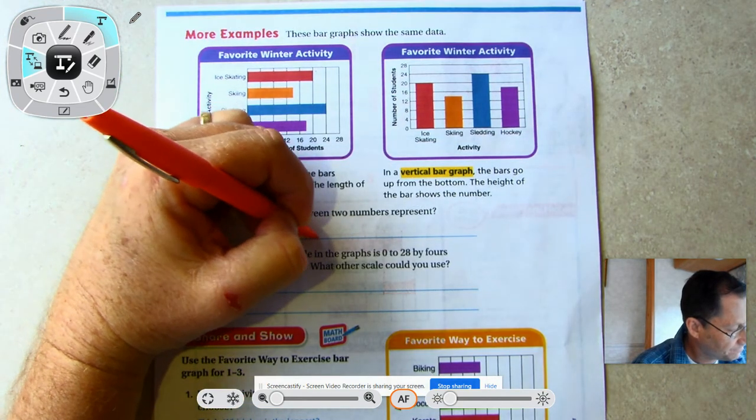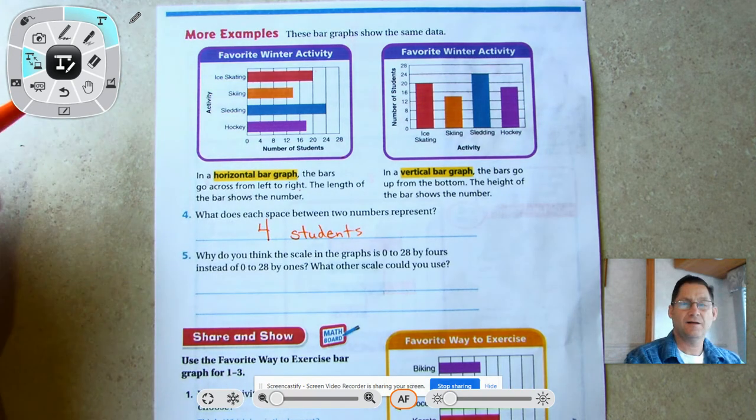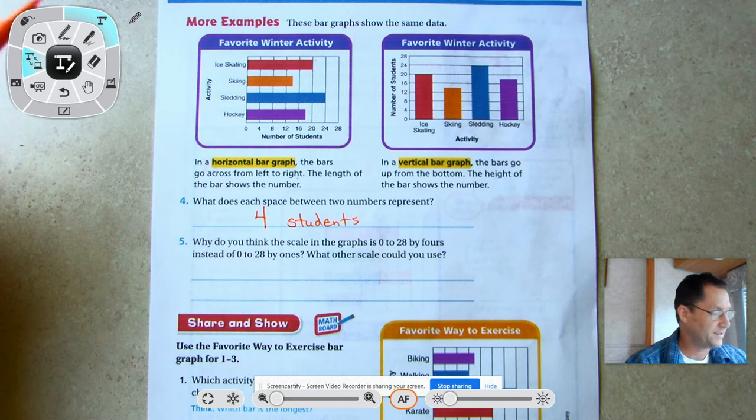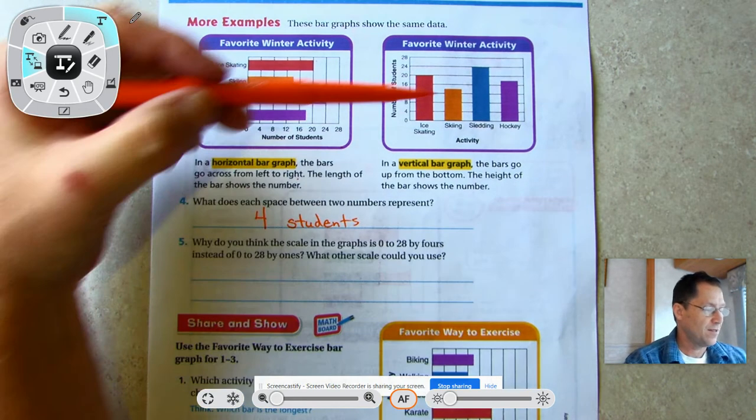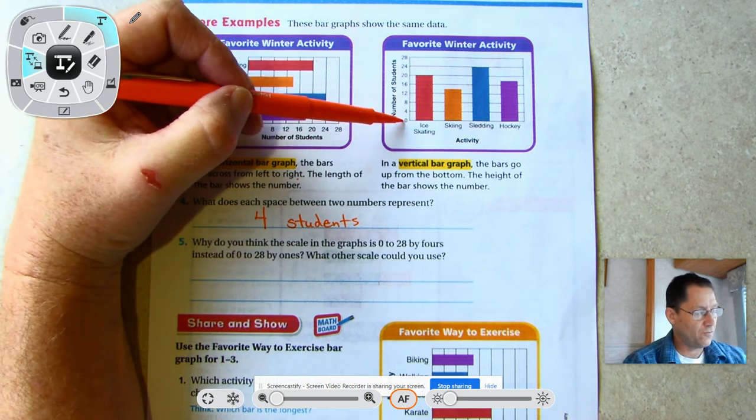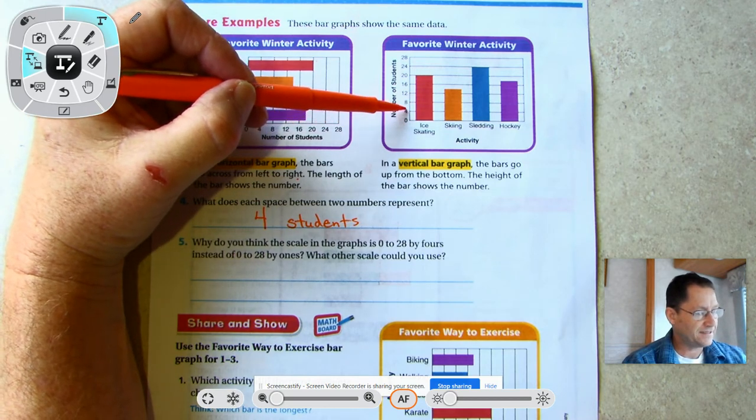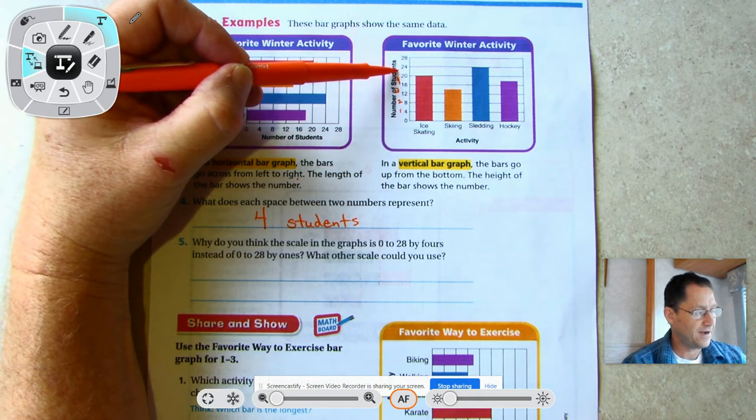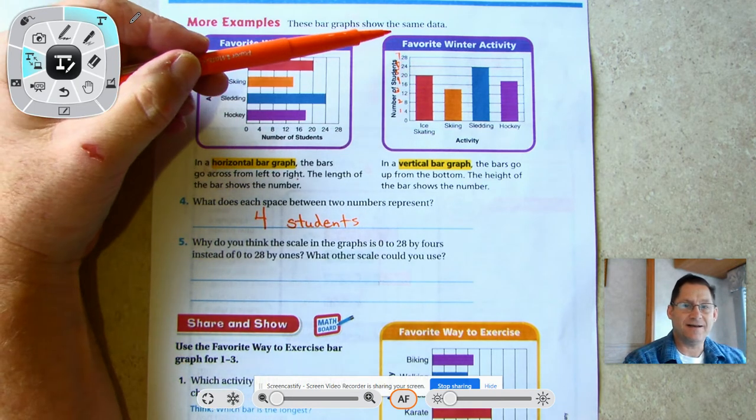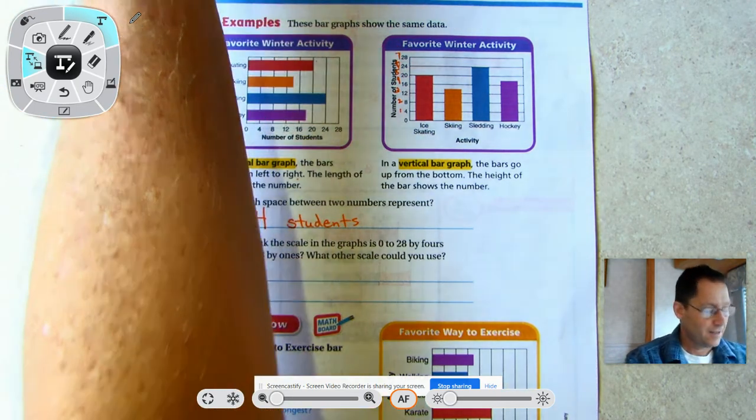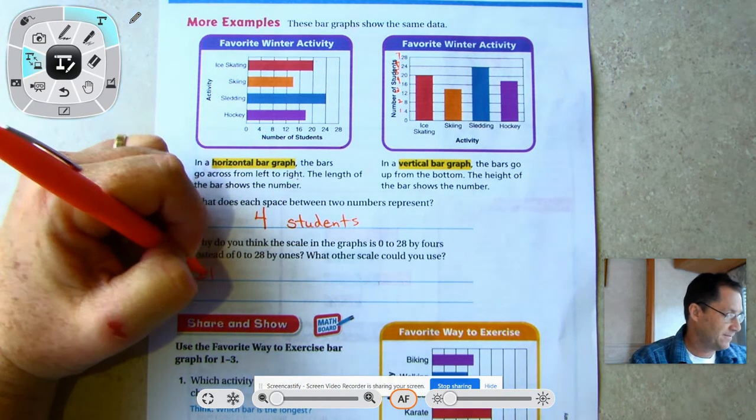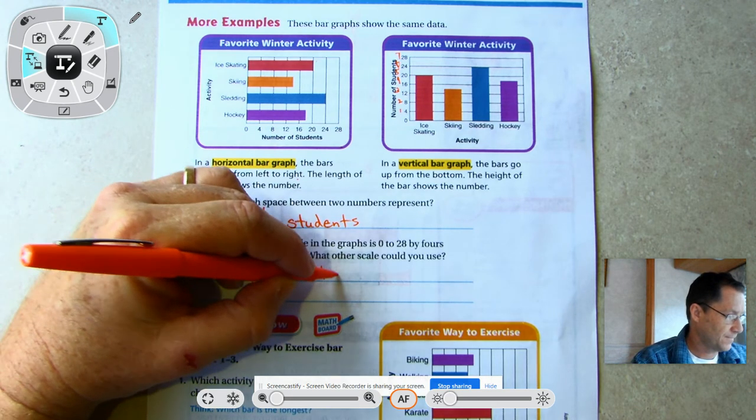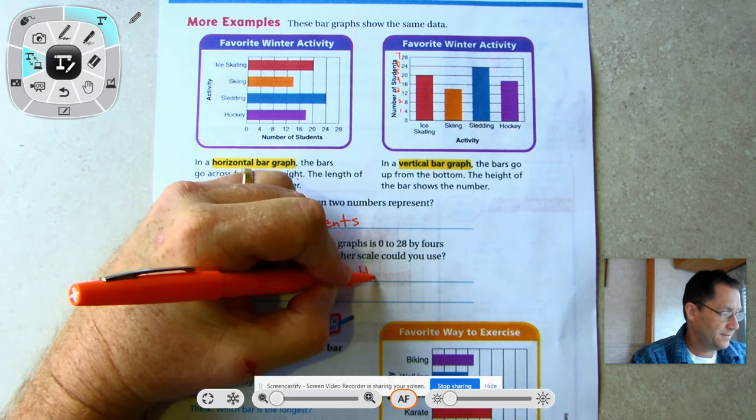We're going 0, 4, 8, 12, 16, 20, 24, 28 - it's counting by four, so four students. Why do you think the scale is 0 to 28 by fours instead of 0 to 28 by ones? Well, let's think about that. Right now we have a scale of four, but what if each of these lines was one? We'd have one, two, three, four, five, six, seven - I'm only at seven and I gotta go all the way up to twenty eight. So it may not fit on the page if you have to count by ones.